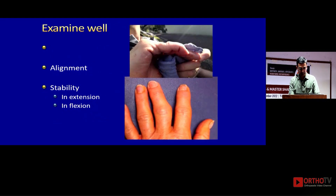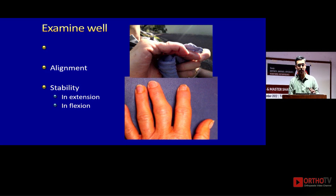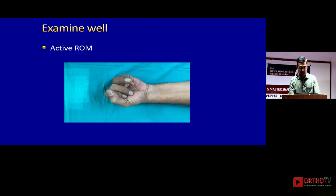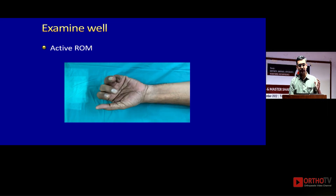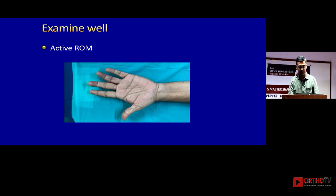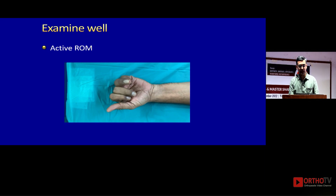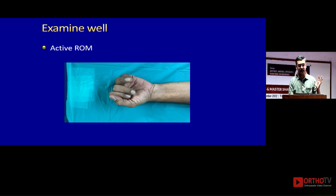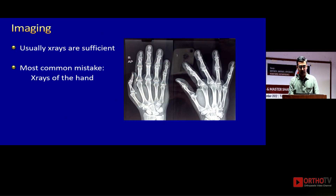Occasionally you will see obvious deformities in the coronal or sagittal plane — everybody will go for an x-ray. But the key to investigate a PIP joint is to check for active range of motion. If the patient has any swelling and is just unable to bend — 0 to 70 degrees is more than enough, but if they can only reach 0 to 20 degrees — get an x-ray done.